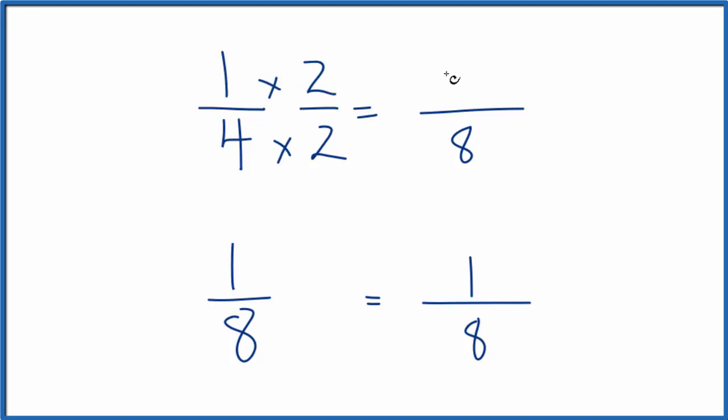1 times 2 is 2. So 2 over 2, that's the same thing as 1. So I haven't really changed anything. 1/4 is equal to 2/8.